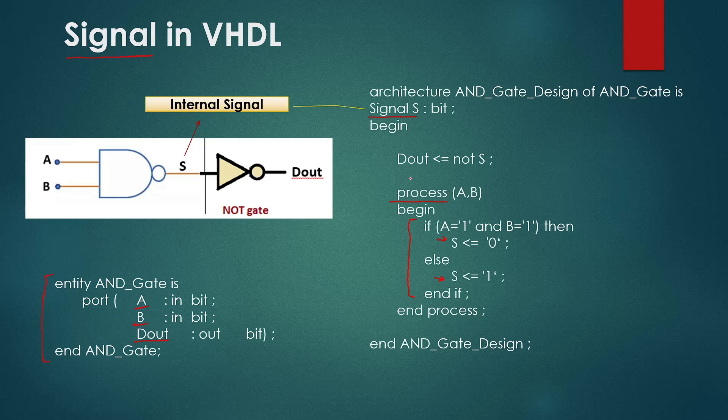Now in the concurrent statement outside the process we used the NOT gate to invert the value of our internal signal S and then move that to our final output D out. Note that D out is the output of our interface which we declared in the entity. So that was the basic idea of VHDL that we can describe multiple behaviors and then wire them together using the internal signals. At the moment don't be confused with the concurrent statements and sequential statements because we will be covering them later in this series. But just understand at the moment that anything which we are writing inside the process will execute sequentially and those statements which are outside the process body will execute concurrently.